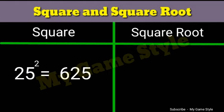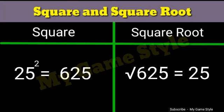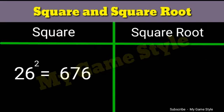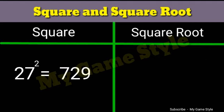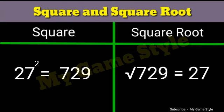Twenty-five square is equals to 625. Square root 625 is equals to 25. Twenty-six square is equals to 676. Square root 676 is equals to 26. Twenty-seven square is equals to 729. Square root 729 is equals to 27.